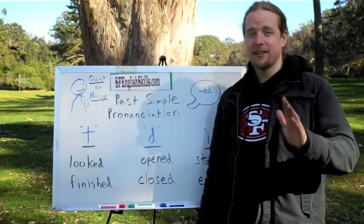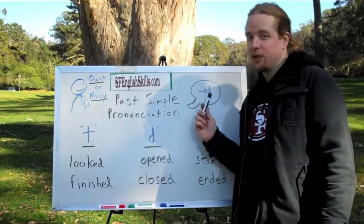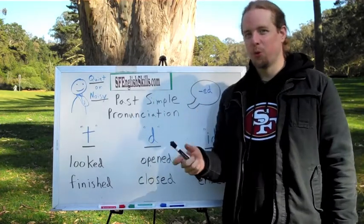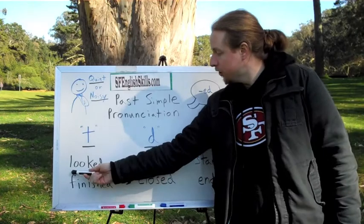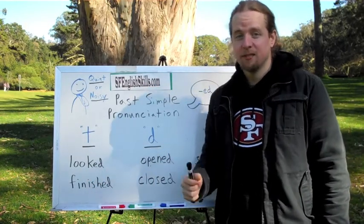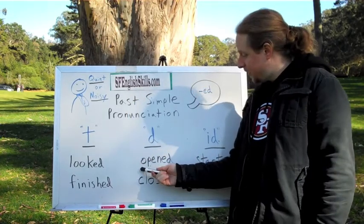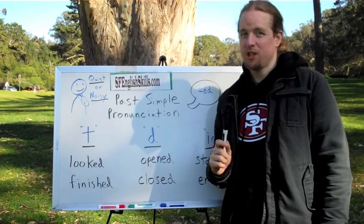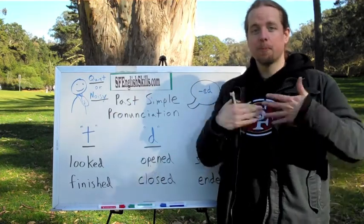So that's it for past simple pronunciation using ED. How do we say the words that use ED? If it's 'look,' we don't say 'look-ed' — we say 'looked.' Yay! If we see 'open,' we don't say 'open-ed' — we say 'opened.' Yay! Good. So let's practice.